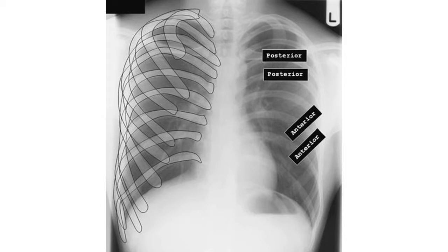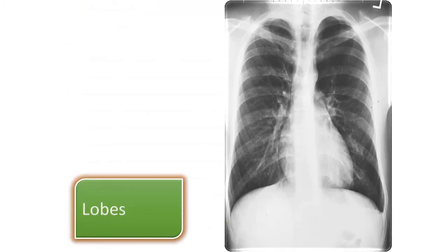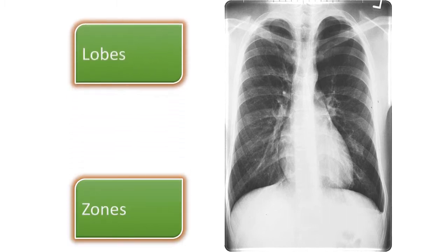In this X-ray you can see the arrangement of the ribs — the more horizontal lines are the posterior ends and the oblique lines are the anterior ends. The right lung has three lobes and the left lung has two lobes anatomically, but in chest X-ray we divide the whole lung field into three zones on both sides.